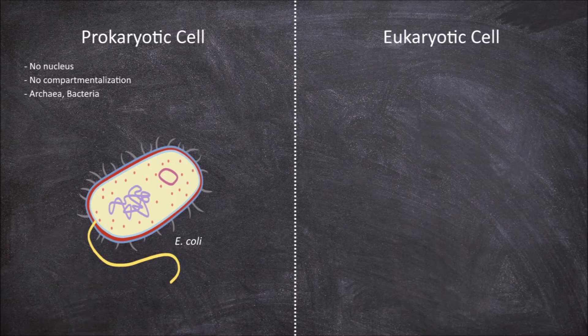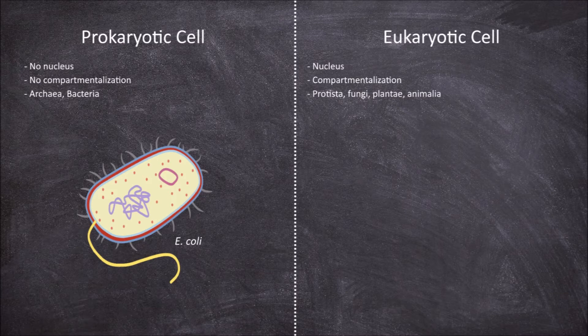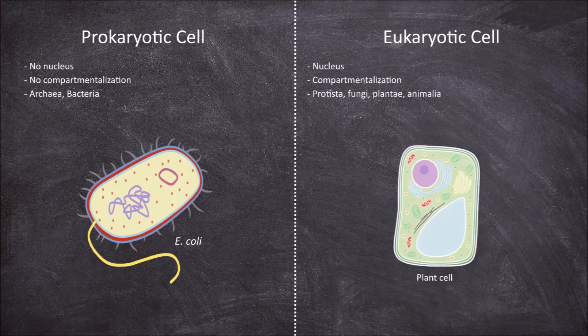Eukaryotes are organisms which have cells that possess a nucleus. They have a complex structure that has compartmentalization in the form of organelles. Organelles are membrane-bound structures that perform unique functions. Eukaryotes include members of the four domains: protista, fungi, plantae, and animalia. Plant cells are an example of a eukaryotic cell that we will use for comparison with a prokaryotic cell.